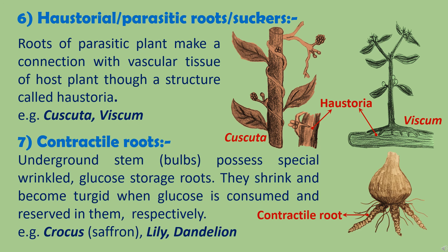Some plants have contractile roots, mostly in plants with underground stems called bulbs. These bulbs have wrinkled glucose storage roots. These roots shrink when the glucose is consumed by the plant and become turgid when the glucose is restored in them. Examples of plants with contractile roots are the crocus plant, also called saffron, lily, and dandelion.